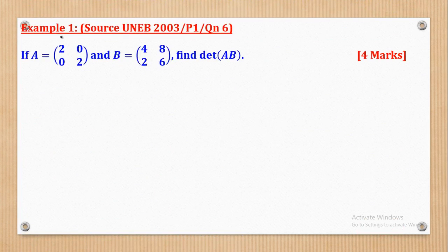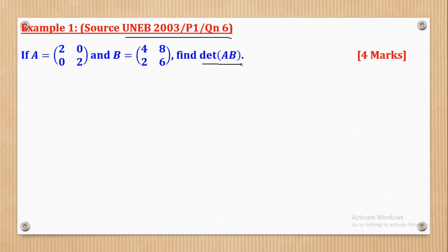Example 1 came from UNEB 2003 Paper 1 Question 6. It says: given Matrix A which is [2, 0; 0, 2] and Matrix B which is [4, 8; 2, 6], find the Determinant of AB. That means you have to multiply A with B first and then find its Determinant.